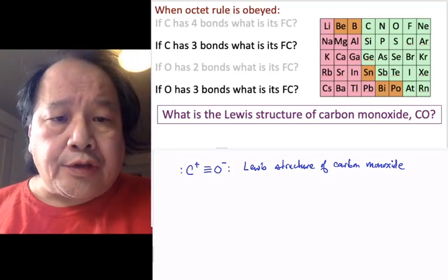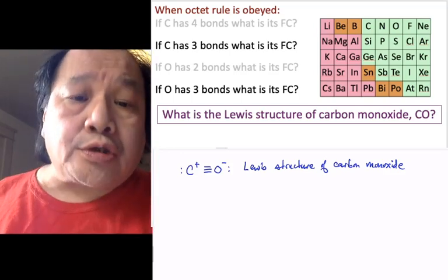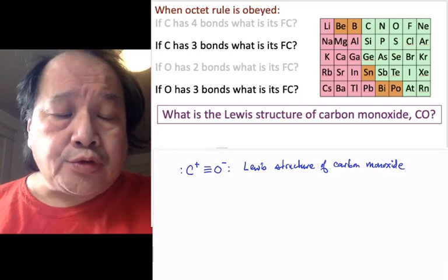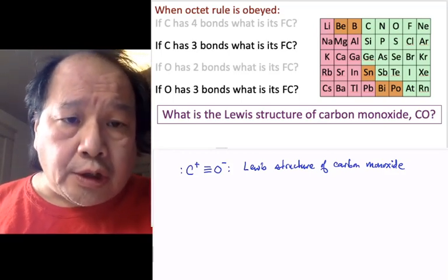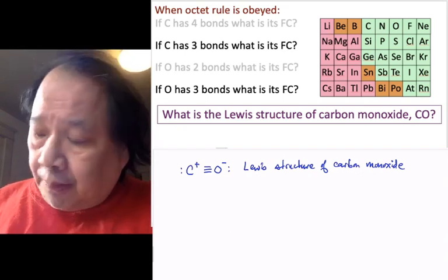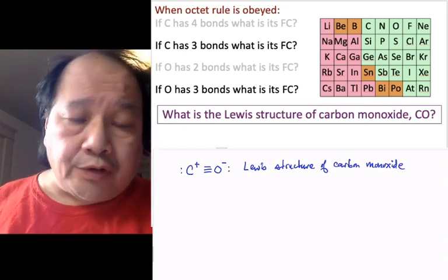So last time we saw that I showed you the Lewis structure of carbon monoxide with a triple bond between the carbon and oxygen, the carbon with a plus charge, the oxygen with a minus charge, and both the carbon and the oxygen atoms have a lone pair.